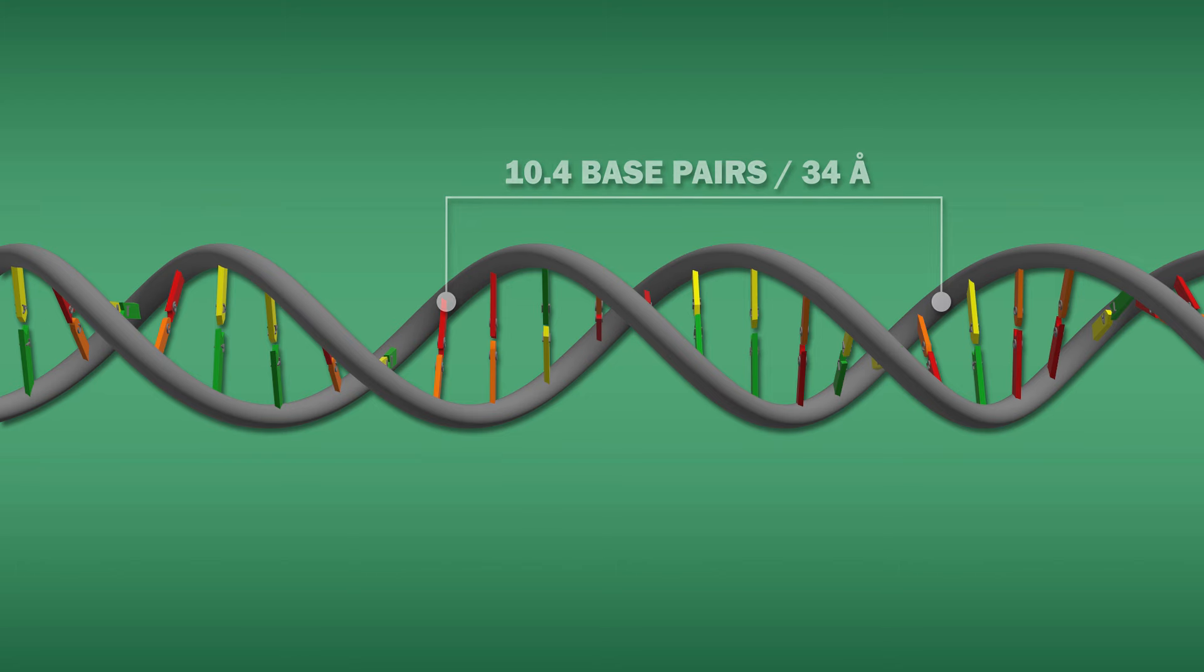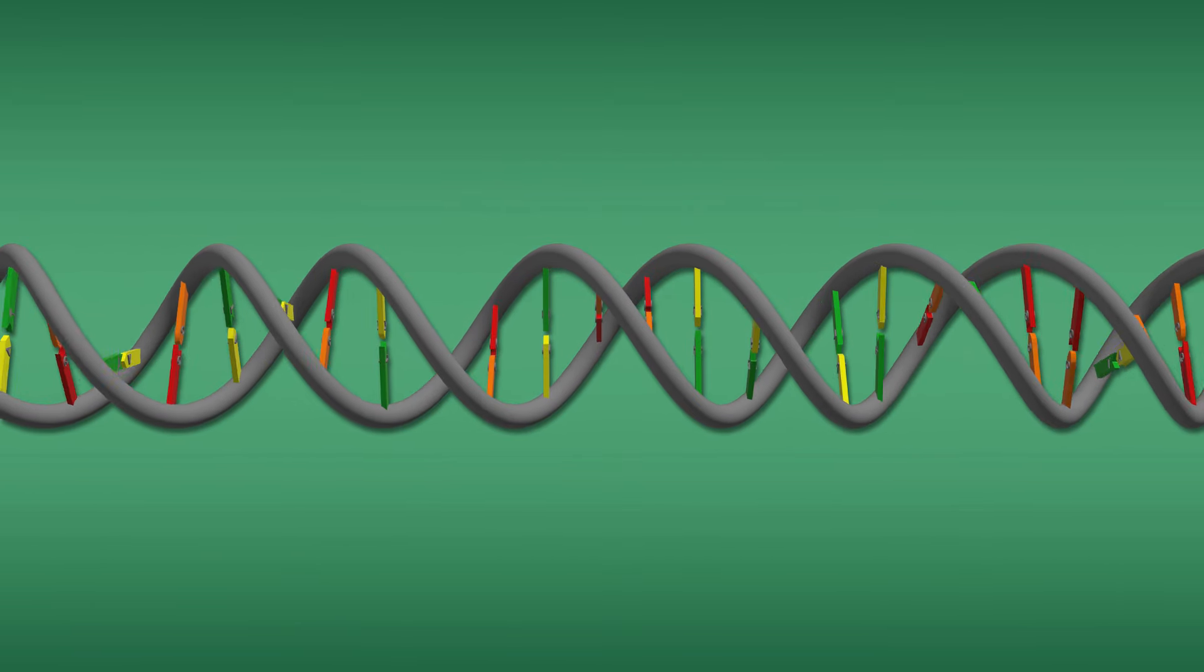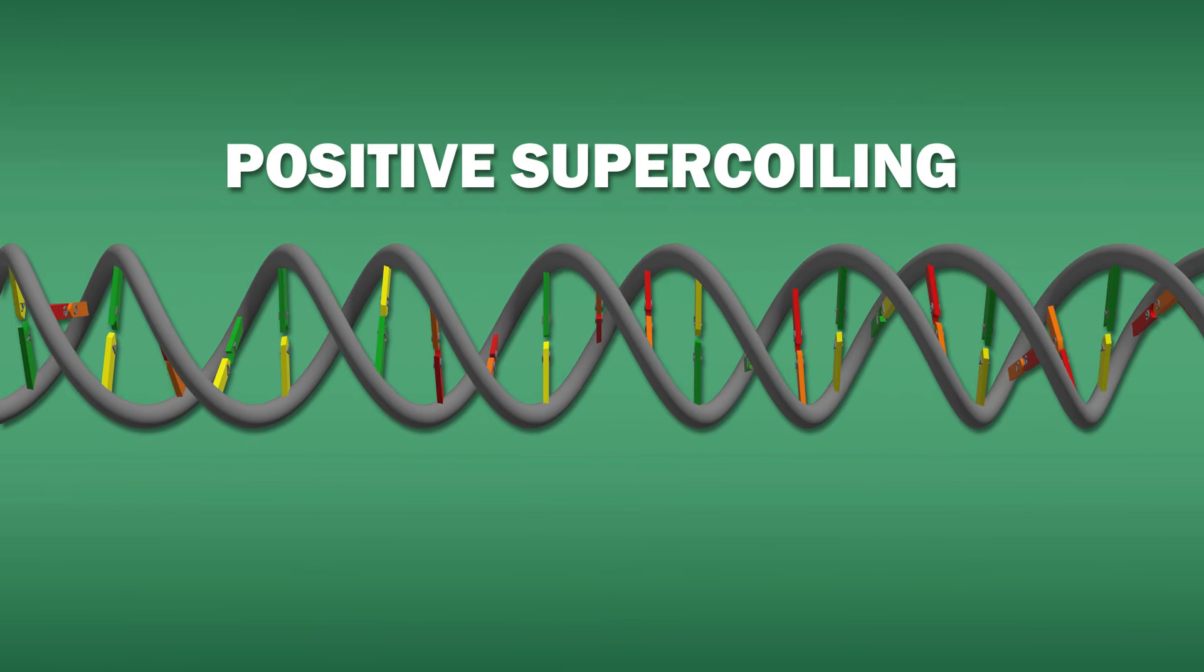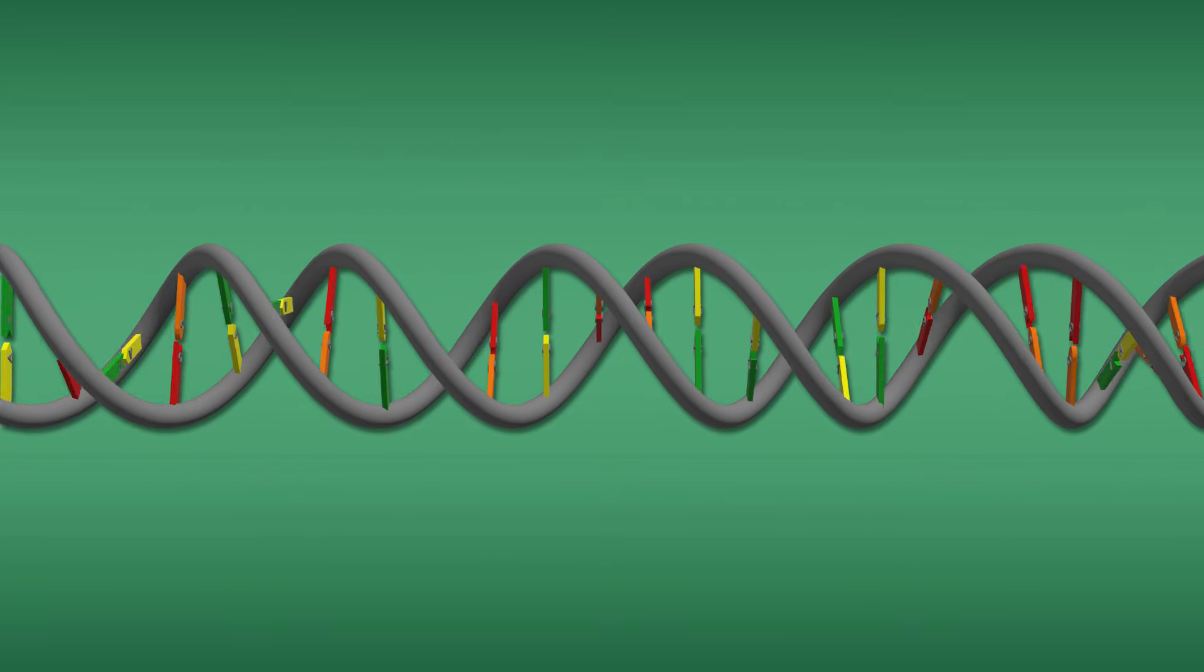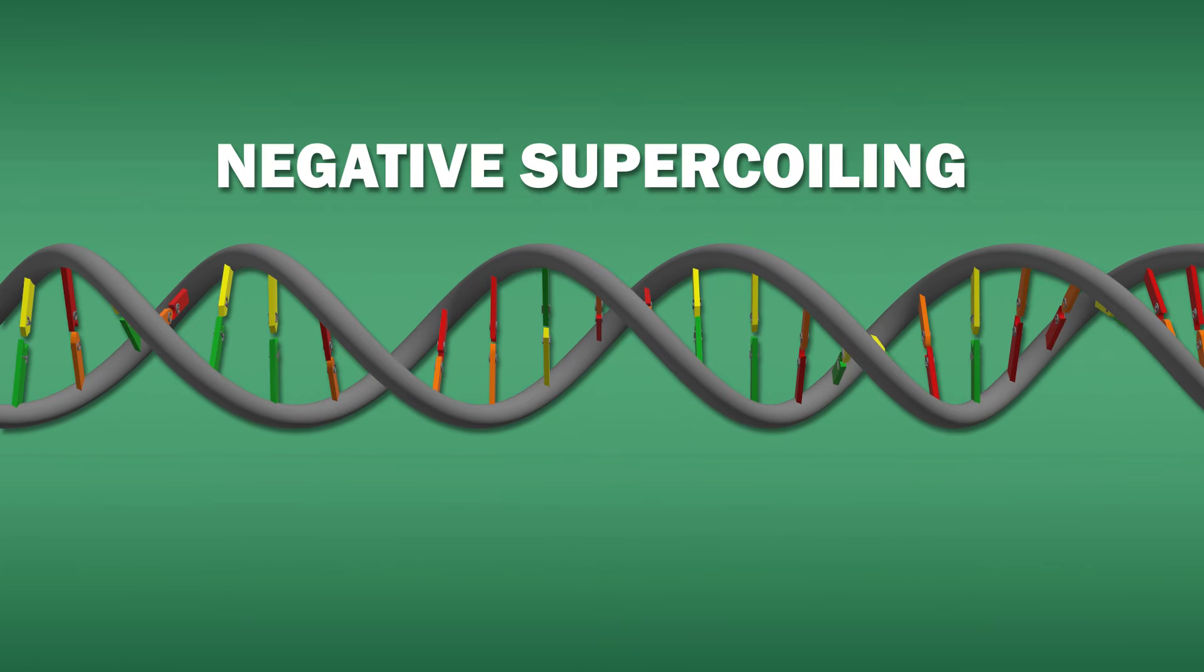In its relaxed state, each DNA strand makes one loop around the axis of the double helix once every 10.4 base pairs, with a pitch of 34 angstroms. If the DNA is being twisted tighter in the same direction, this is called positive supercoiling, while being twisted in the other direction is called negative supercoiling.